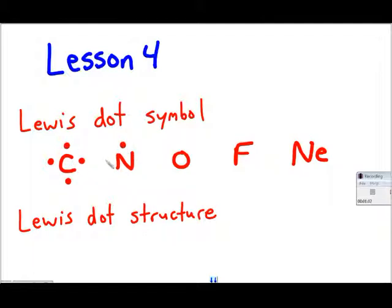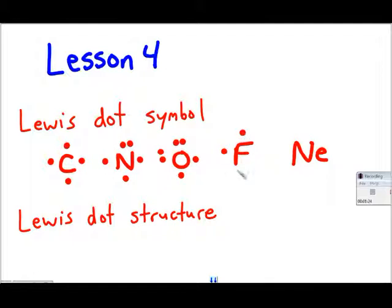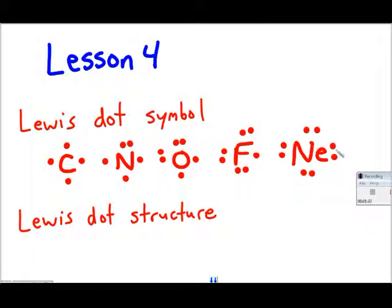Nitrogen has 5, so I start off the same: top, left, bottom, right. I have a fifth electron, so I start to pair them up. Oxygen has 6: 1, 1, 1, 1, then a second goes here making one pair, a second goes here making two pairs. Fluorine has 7 valence electrons — 1, 2, 3, 4, 5, 6, 7 — so it has 3 pairs with 1 lone electron. And neon, a noble gas, has 8, so I fill in 4 pairs of 2. These are Lewis dot symbols.